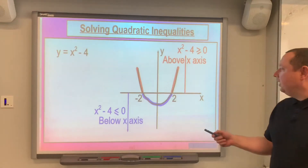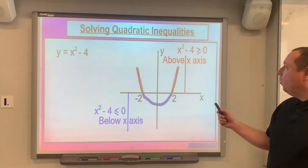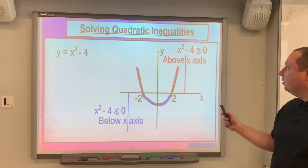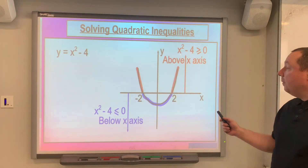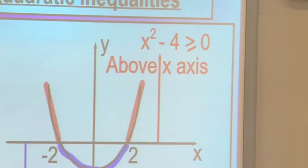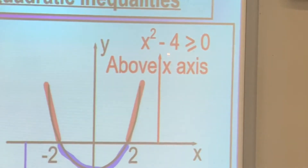It's got roots at minus 2 and 2. Now, if I was to ask when is x squared minus 4 greater than or equal to 0, what I'm asking is when is y greater than or equal to 0. Above 0 means going up — above the x-axis. So all the bits highlighted in red would be when that expression is greater than or equal to 0.